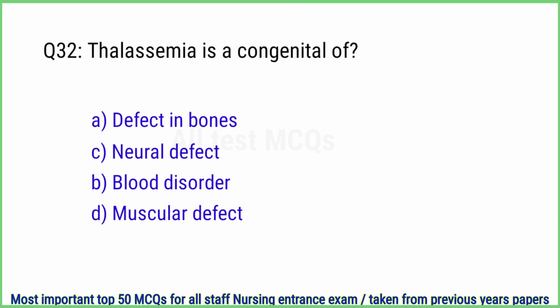Q32. Thalassemia is a congenital? The right answer is option C, blood disorder.